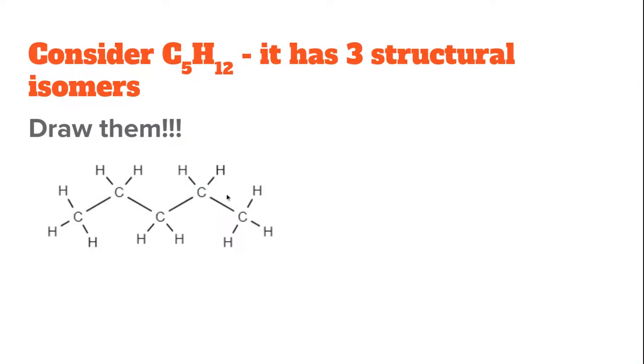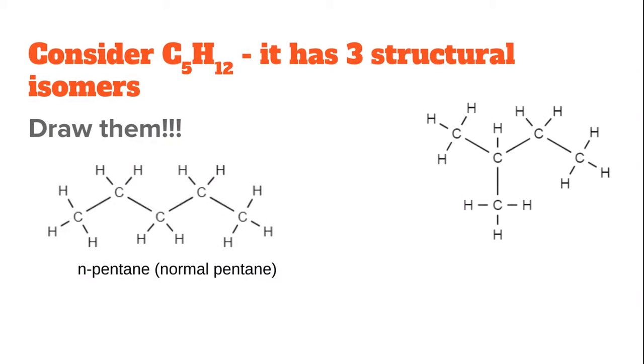Now I'm going to take one of these carbons and attach it to a middle carbon. So there's normal pentane. And now I take one of those carbons on the end and attach it not to the one on the end, because that would still be normal pentane, but to carbon 2 in this case. So this now doesn't have a long chain of five carbons - it has a long chain of four. So this is a butane of some sort.